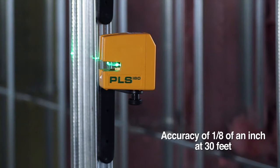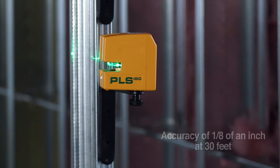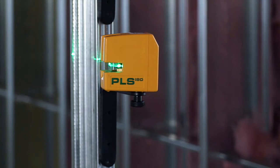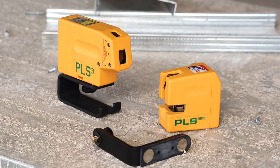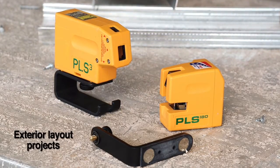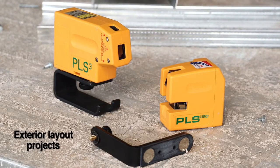With the accuracy of 1 eighth of an inch at 30 feet, the PLS 180 green beam maintains the high performance specs of its red beam counterpart. The PLS 180 green and the dedicated SLD green beam laser detector are ideal for handling exterior layout projects.